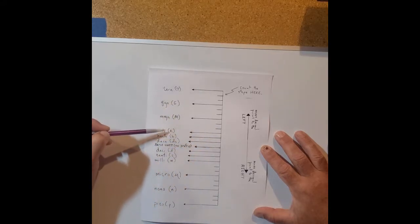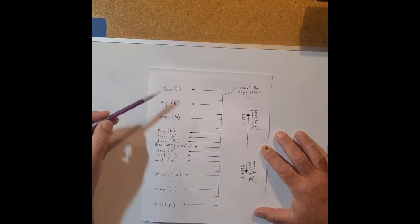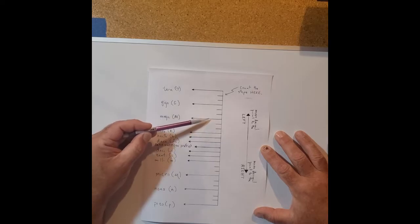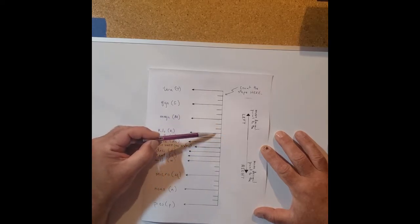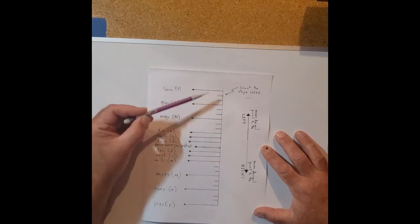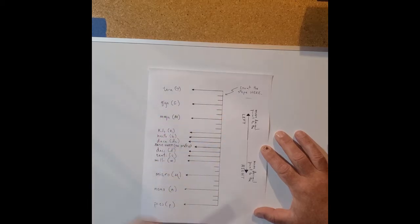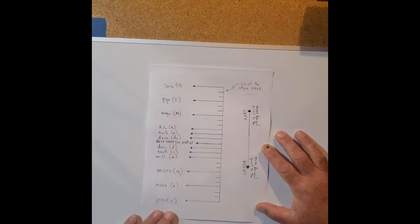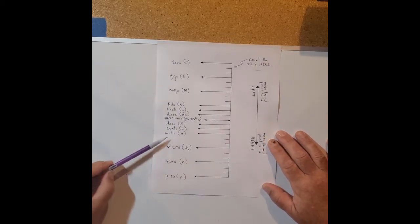You can see that when we get above kilo - mega, giga, tera - these are spread out. Each one of these jumps counts as three steps. So I've included these extra steps in between.